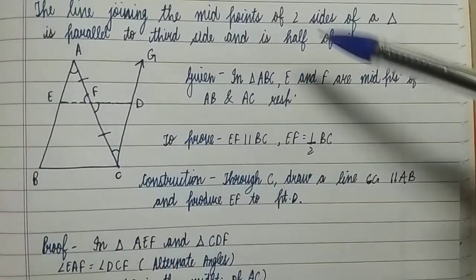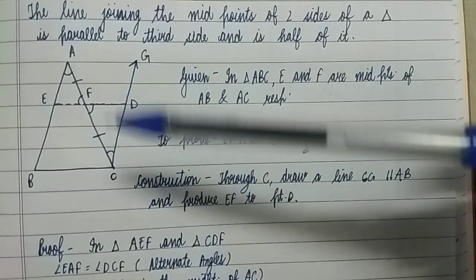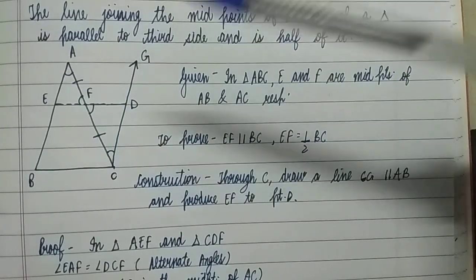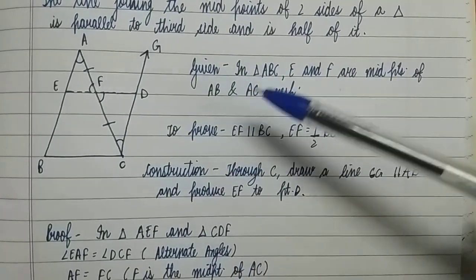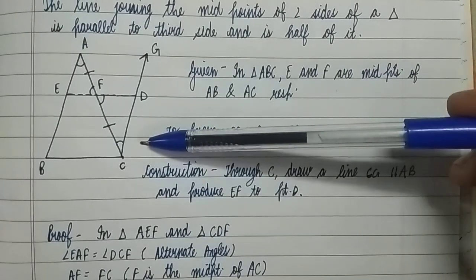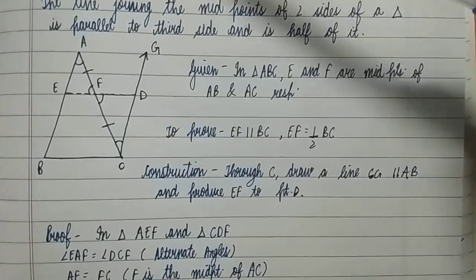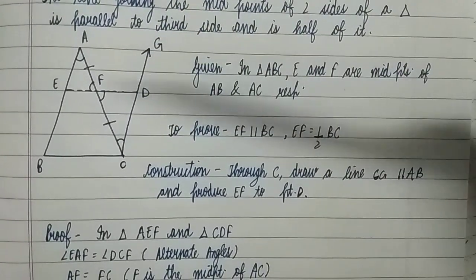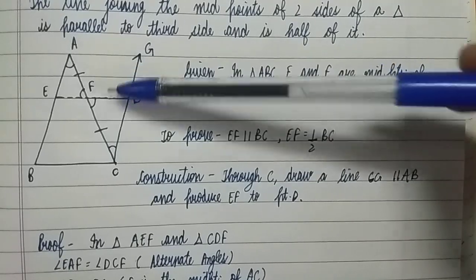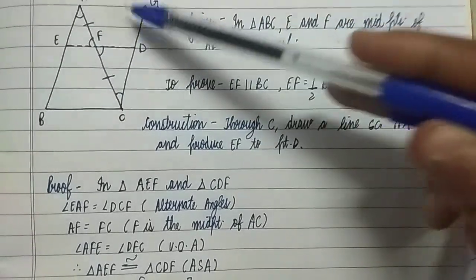In the proof, we take two triangles: triangle AEF and triangle CDF. In both triangles, angle EAF equals angle DCF because these are alternate angles — we proved by construction that AB is parallel to CG. Angle AFE equals angle CFD because these are vertically opposite angles. Also, AF equals FC because F is the midpoint of AC.